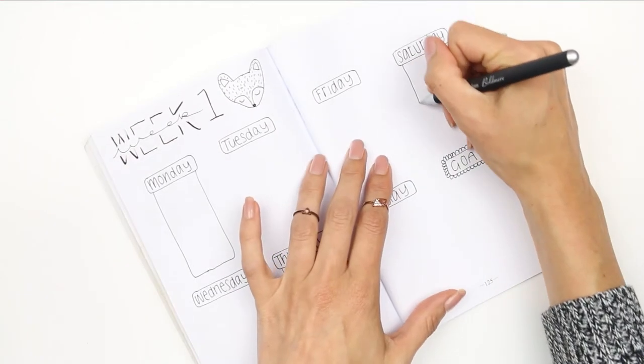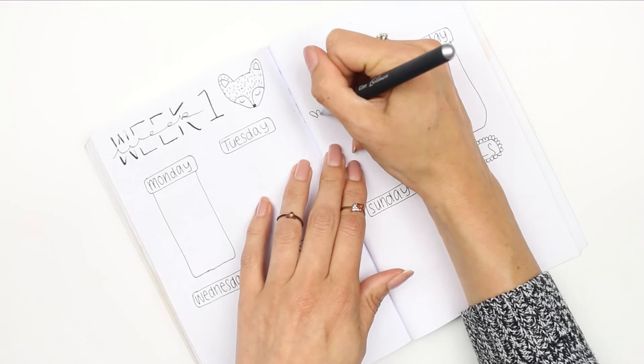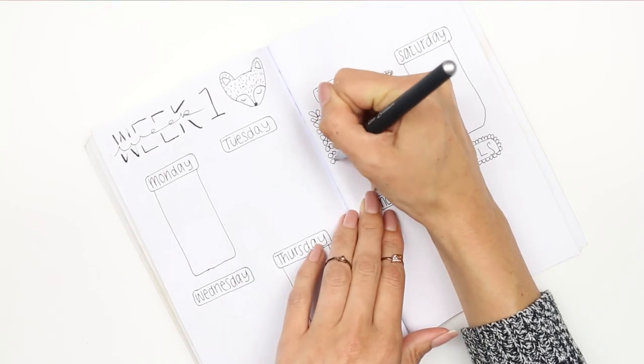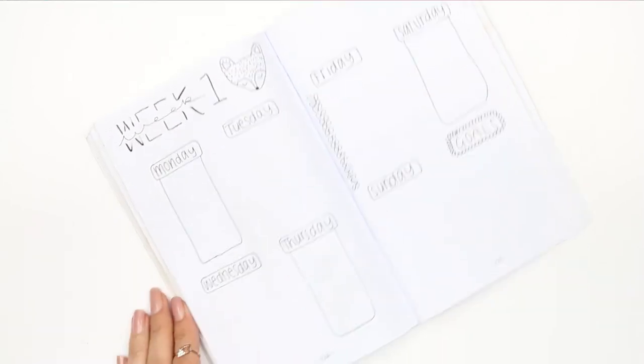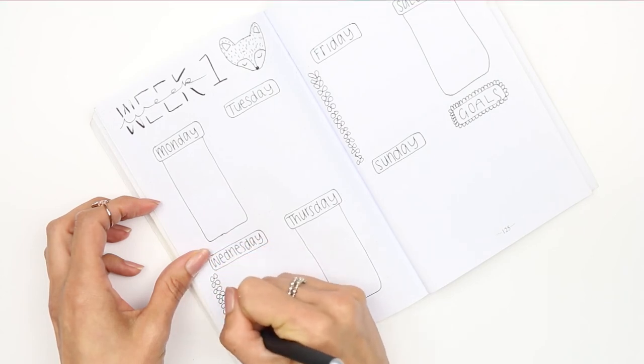You could leave it or you can draw little boxes around it. I drew boxes around some, I've done these little leaves down the sides and then on the other parts I've just done little laurels.